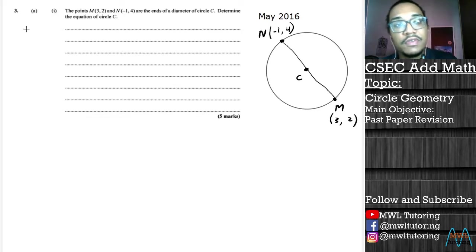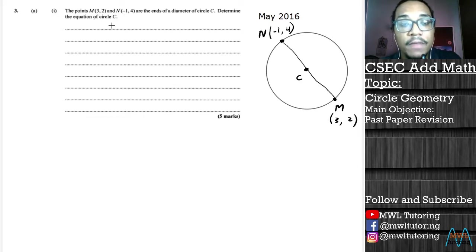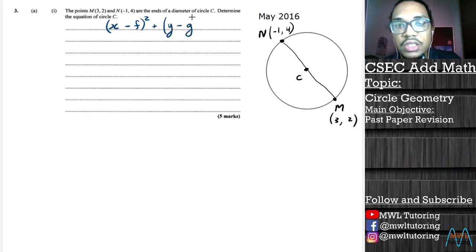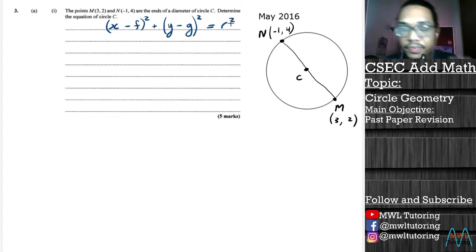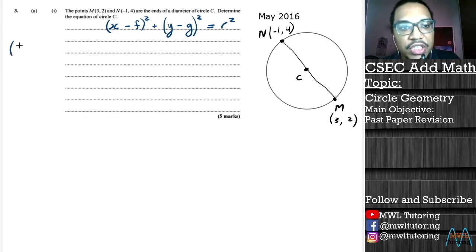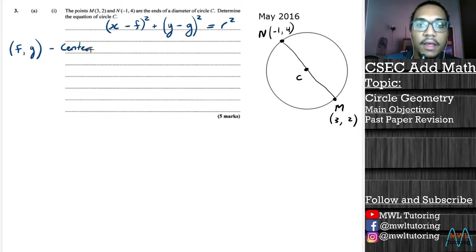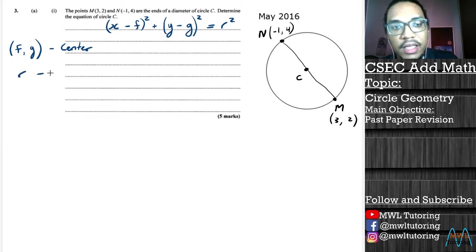Let's start off by writing out the general form of the equation of the circle. That general form looks like this: (x - f)² + (y - g)² = r². What's special about this formula is that f and g are the coordinates for the center of the circle, and r is the radius.